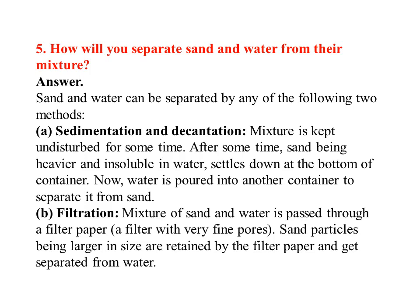In sedimentation and decantation, when the mixture is kept undisturbed for some time, sand — being heavier and insoluble in water — settles down at the bottom of the container. Water is then poured into another container to separate it from sand. In filtration, the mixture of sand and water is passed through a filter paper with very fine pores. The filter paper acts as a sieve; sand particles, being larger in size, are retained by the filter paper and separated from the water.